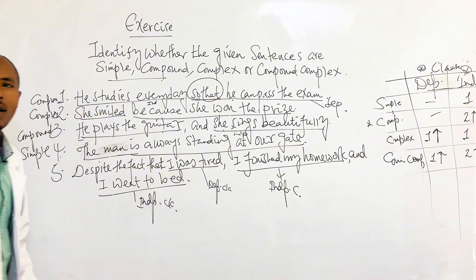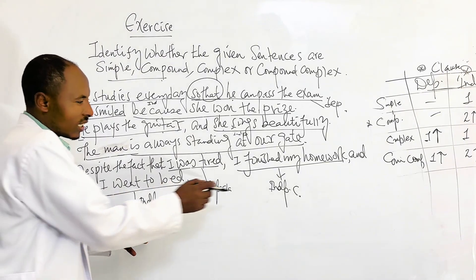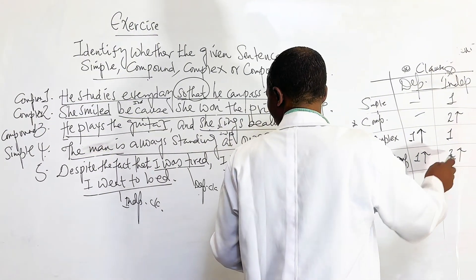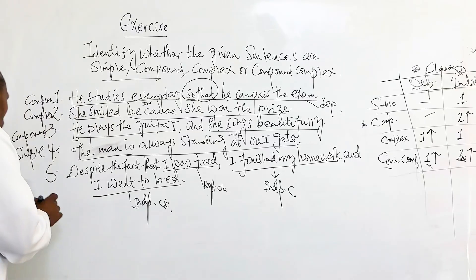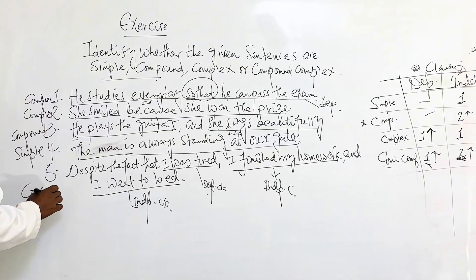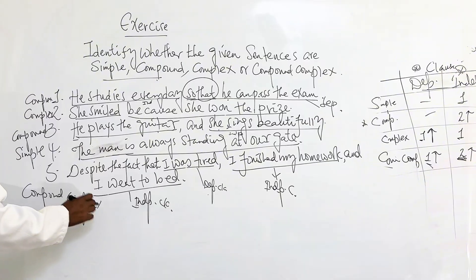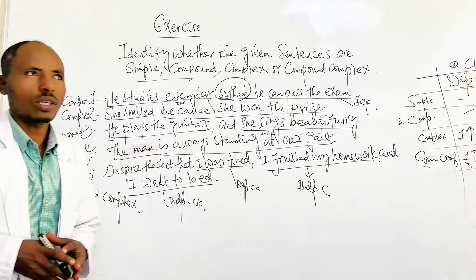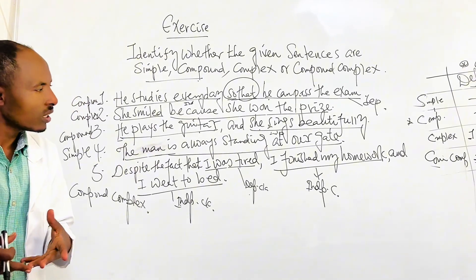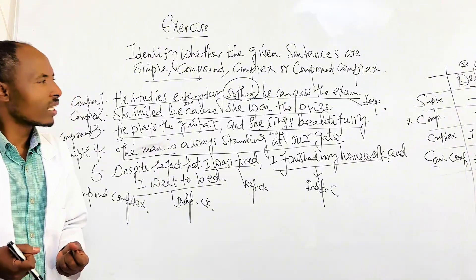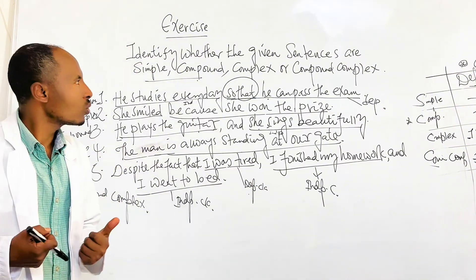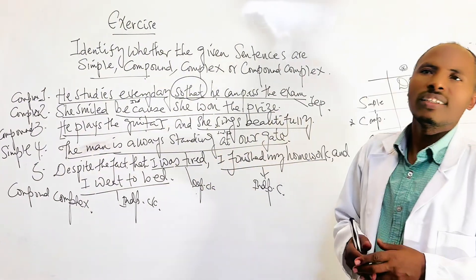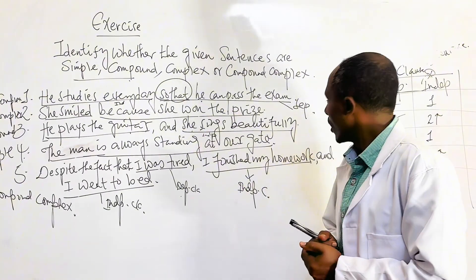Now you can count: two independent clauses and one dependent clause — therefore this sentence is compound-complex. In summary, the connector matters. If the connector is subordinating, the clause that follows is dependent. Identify the subject-plus-verb pattern in each clause and you can identify any structural classification of sentences.